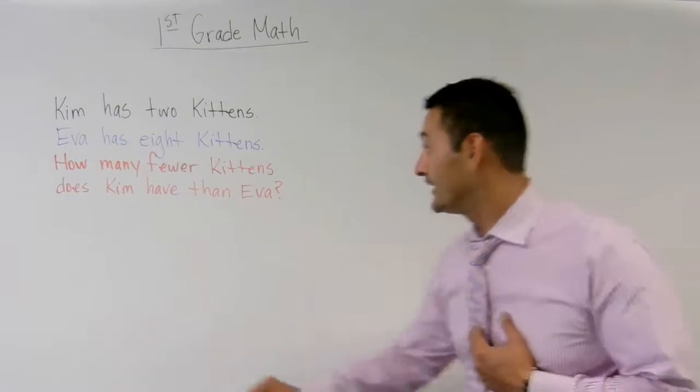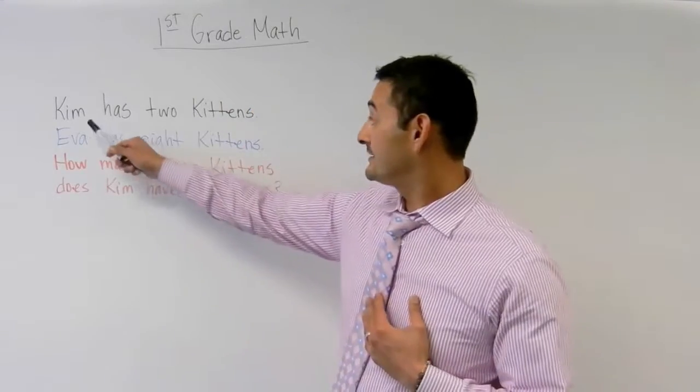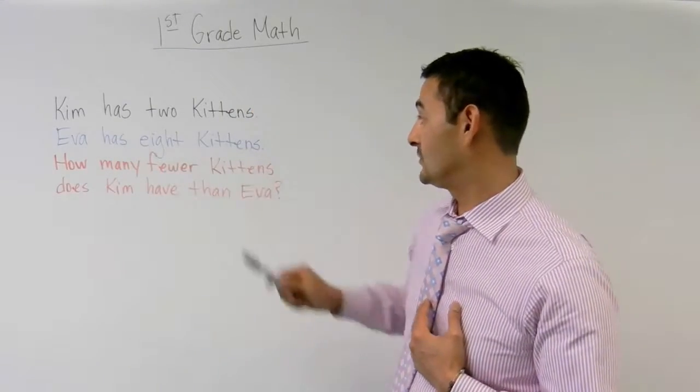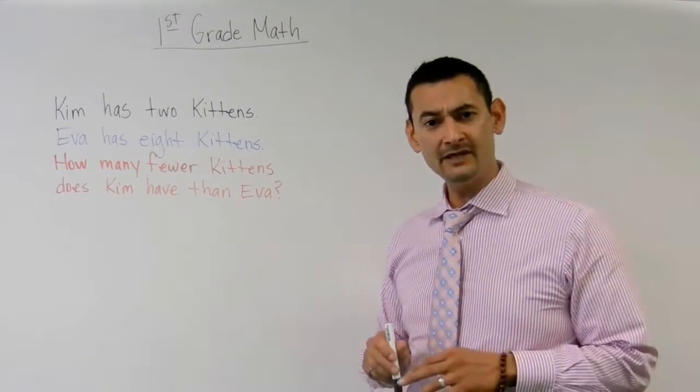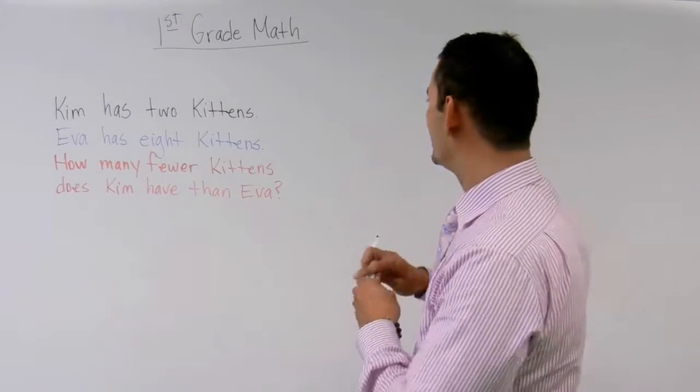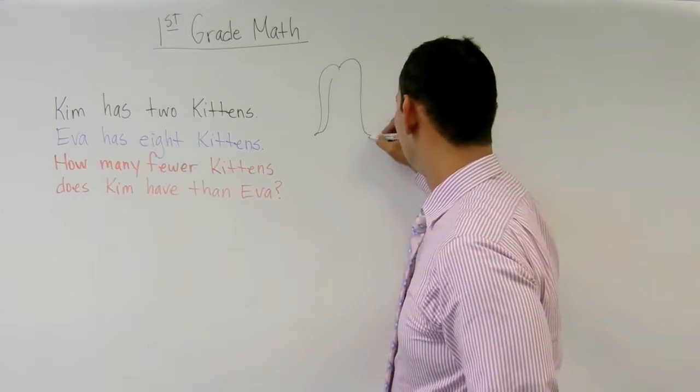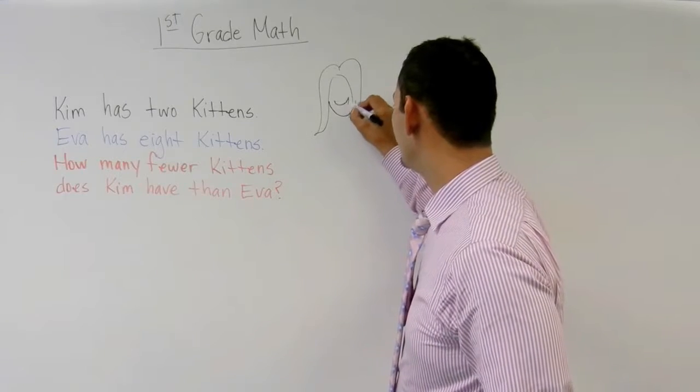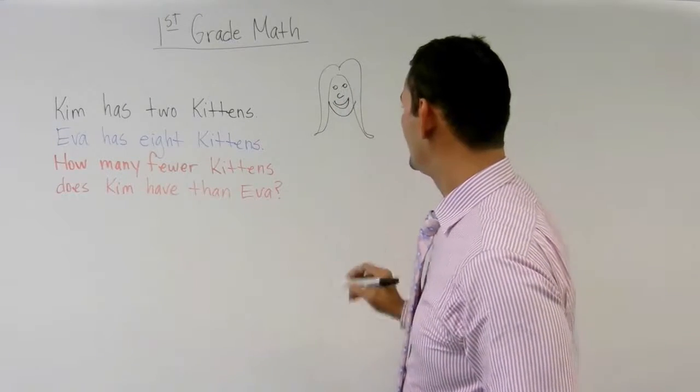Let's look at the black part first, okay boys and girls. This says Kim has two kittens. So can we do something with that? Sure we can. So let's go ahead and draw Kim. And I always encourage you guys to draw pictures. So here's Kim.